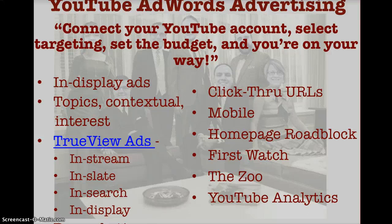In-slate ads show before YouTube partner videos that are 10 minutes or longer. Viewers choose to watch one of three ads or see regular commercial breaks during the video instead — you pay only when viewers choose to watch your video. In-search ads appear above or to the right of the regular results on the search results page — you pay only when someone chooses to watch your video. The theme here is that you're not paying for glimpses or when YouTube forces someone to see the first couple seconds of your ad.